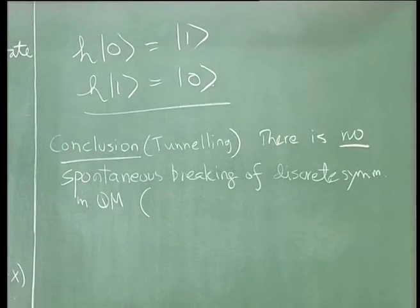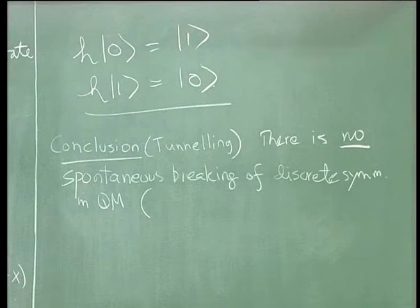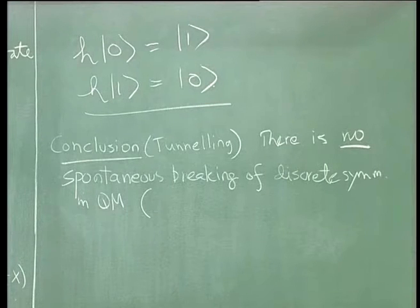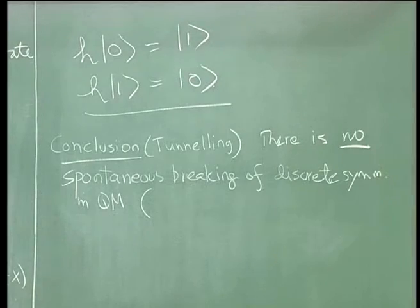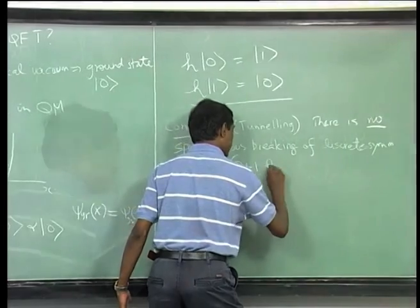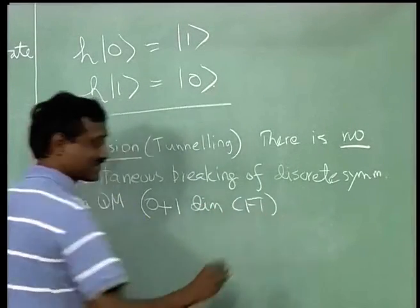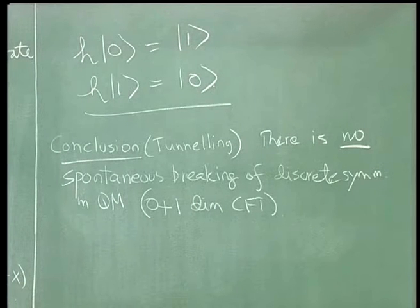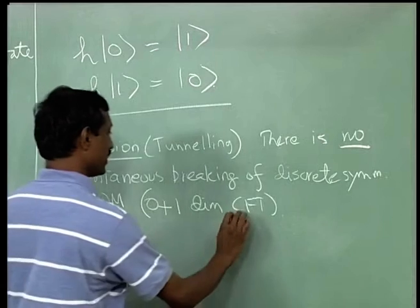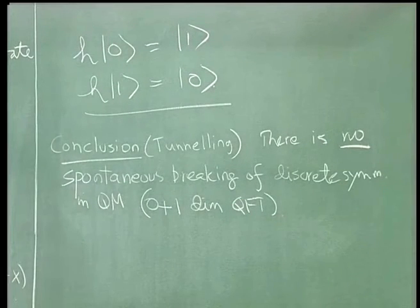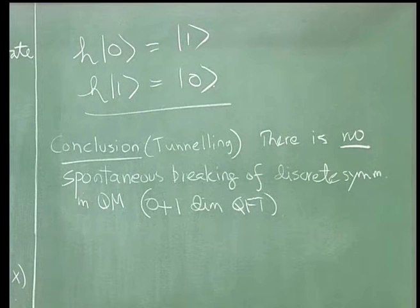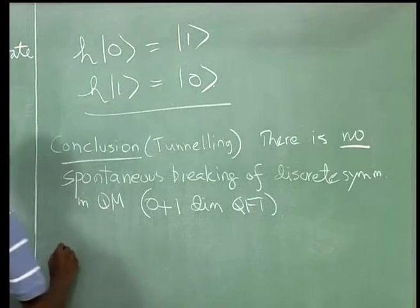It is useful to think of quantum mechanics as 0+1 dimensional field theory — it has time but a discrete number of degrees of freedom, so we call it 0+1 dimensional QFT. Now the question is: what happens when we raise the dimension by one? Let us go to 1+1 dimensional field theory and see what happens.